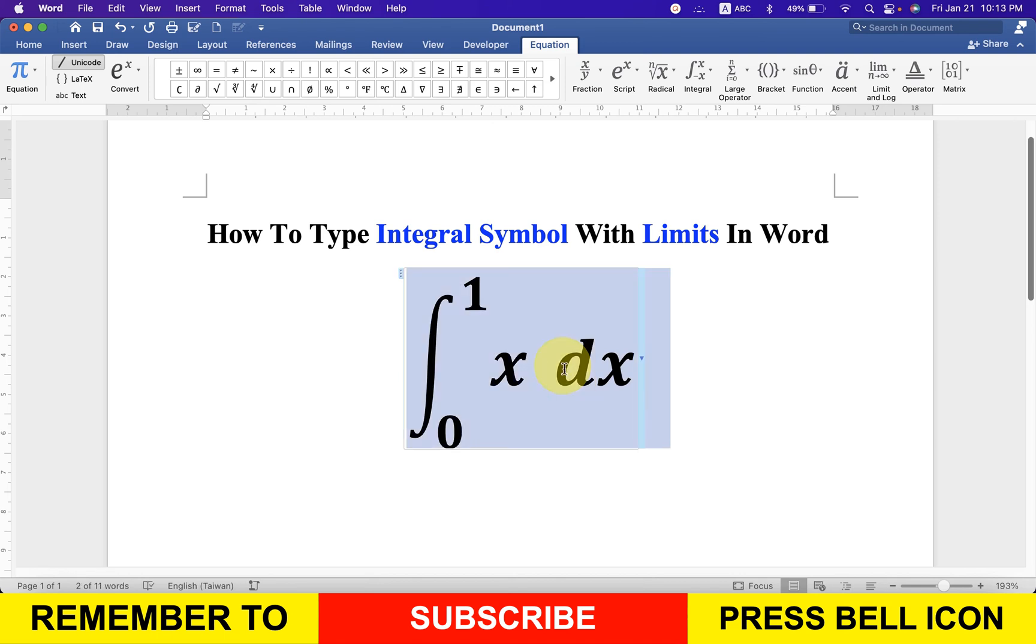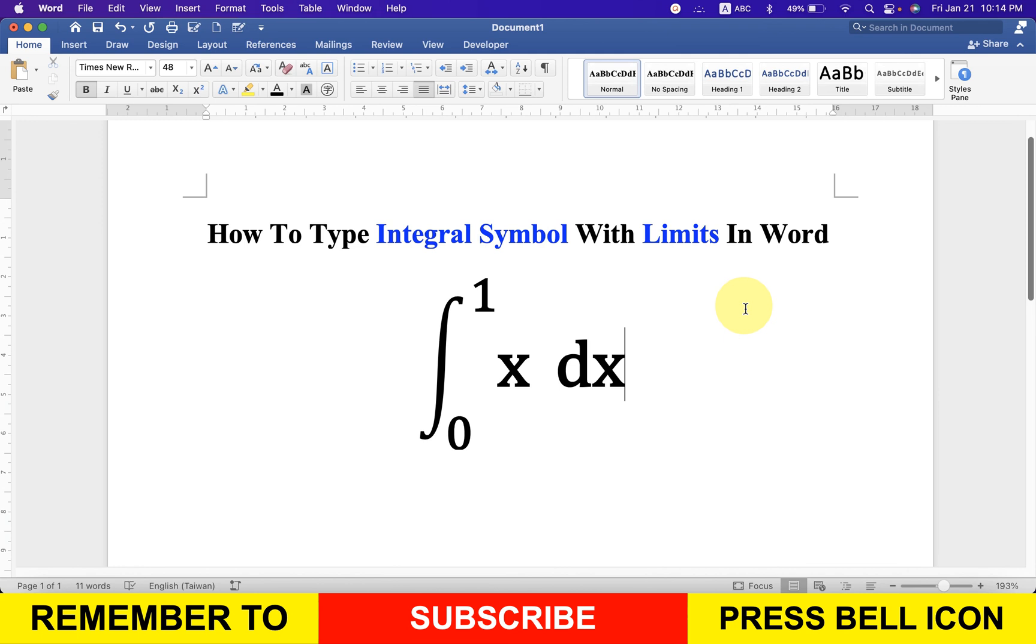To remove italics, select everything and under the Equation tab you will see the option ABC Text. Click on it and the italics will be removed from the equation.